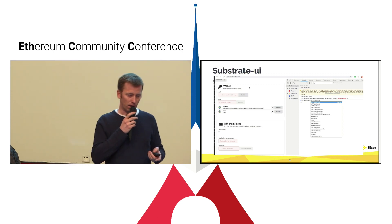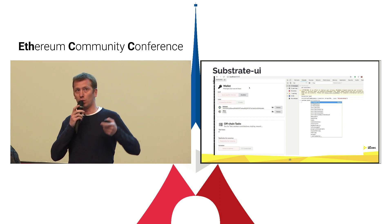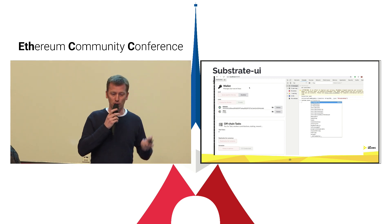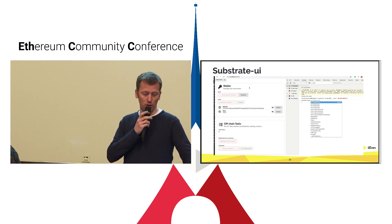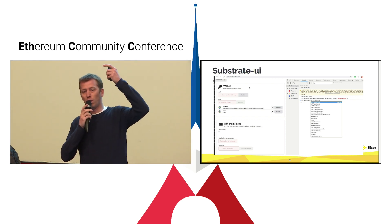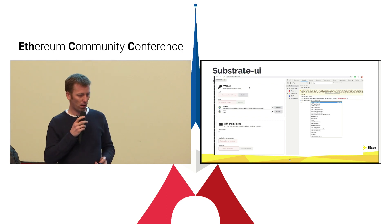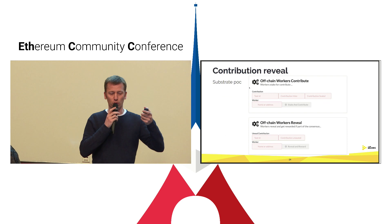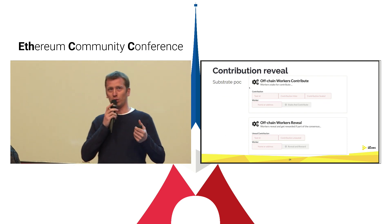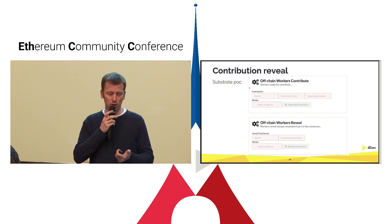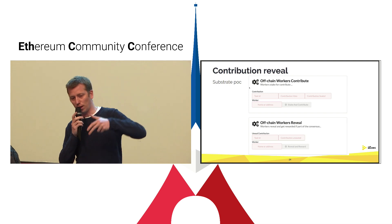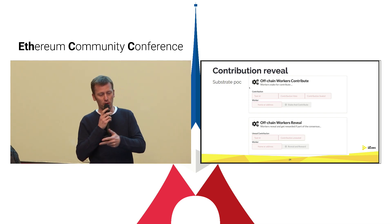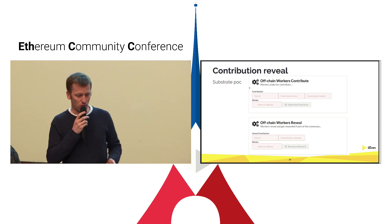Substrate has an interface that allows you to quickly test your new runtime. You run your blockchain, connect the interface to the runtime, and in the console you can access your module and all its storage or functions. I created an interface for creating tasks, contributing, and revealing. For contribution, you need the task ID, the vote, and the seal of your contribution. When you contribute, you stake. When you reveal, you provide one parameter and get rewarded if you're part of the consensus.